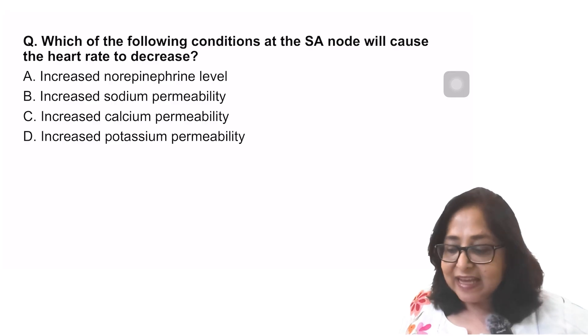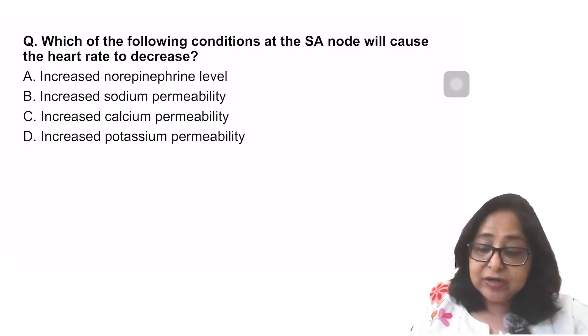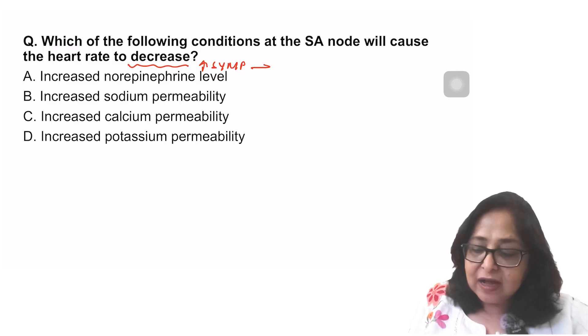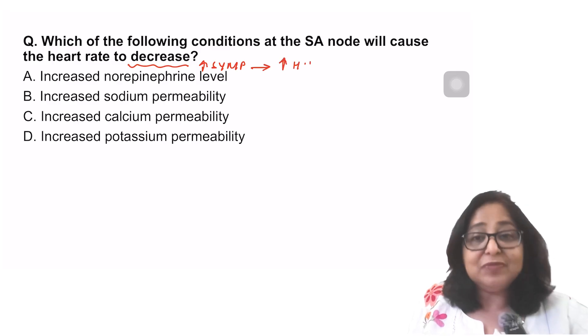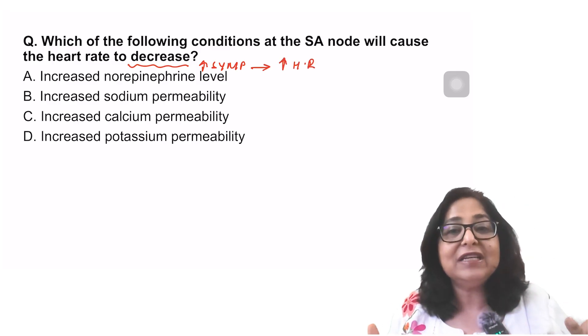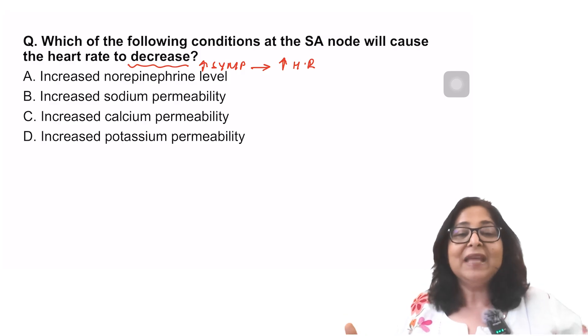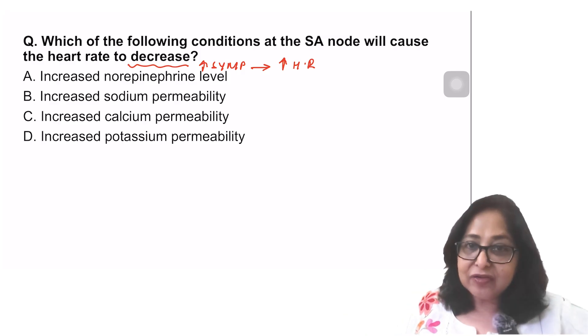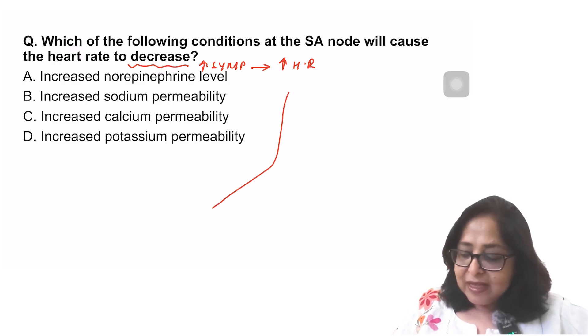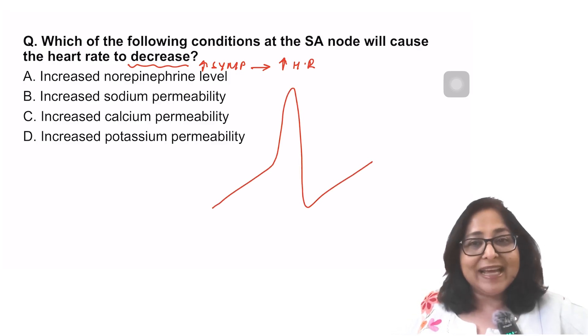Which of the following conditions at the SA node will cause the heart rate to decrease? Increased norepinephrine, that means increased sympathetic discharge, will cause the heart rate to increase. We know that sympathetic is positively chronotropic, so it will cause an increase in heart rate. Before I go on to the other options, let's have a look at the pacemaker potential.